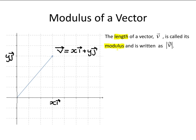The length of a vector v is called its modulus and is written in this form. Here we have the vector v, which is xi plus yj.